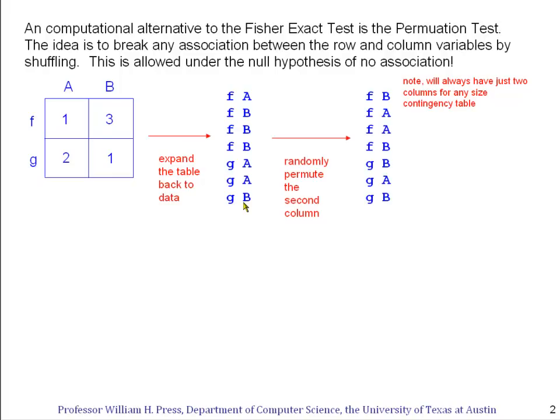Having expanded back the data, we now randomly permute the second column of the data. Because under the null hypothesis, as we've said, there's no association between what value is written in the first column here and what value is written in the second column here.